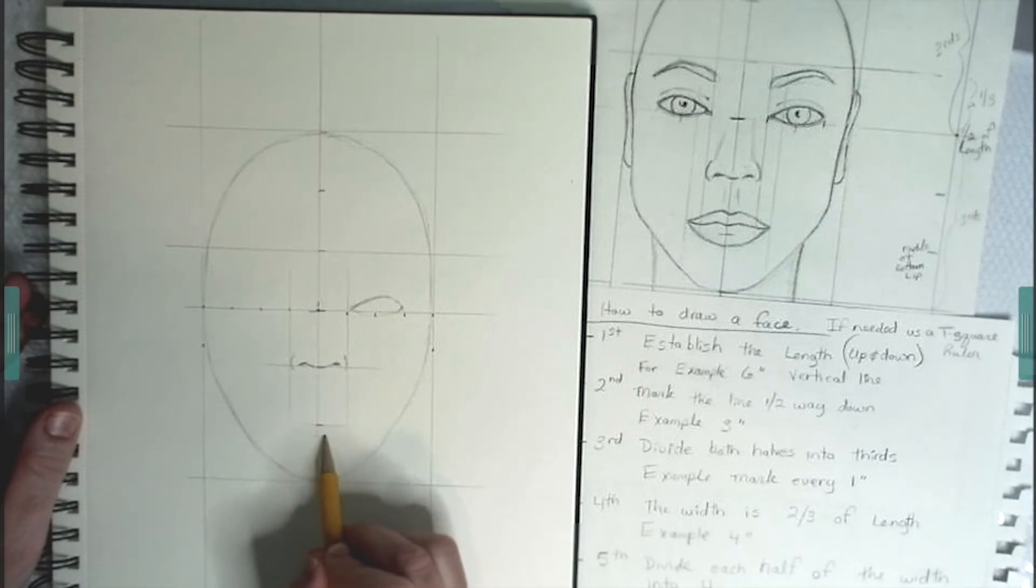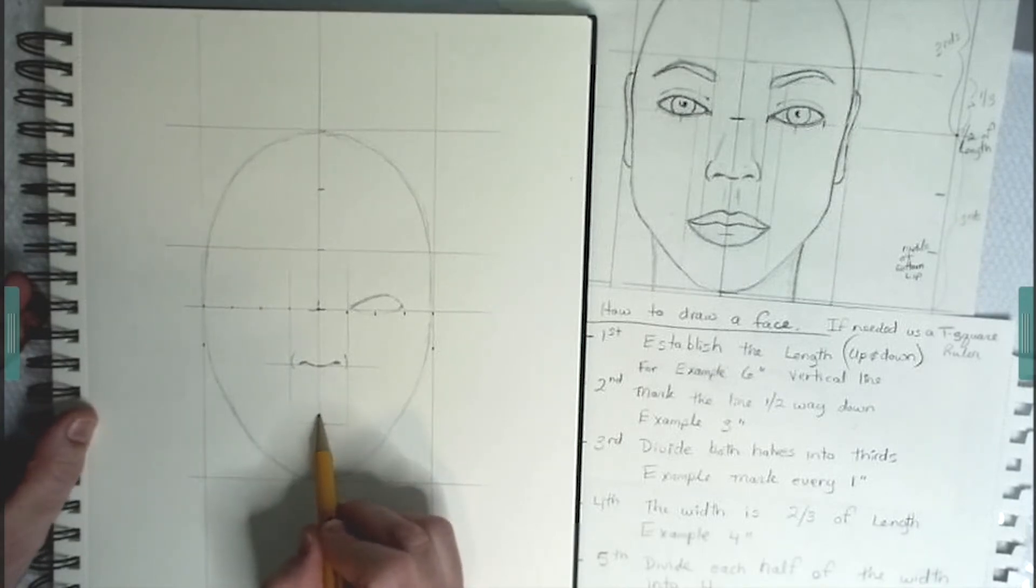That bottom line is really the middle of the lower lip. So now I'm drawing the opening of the mouth, which dips into the middle. It goes up and then it goes back down. And swoops a little bit higher in the ends.